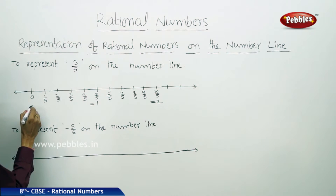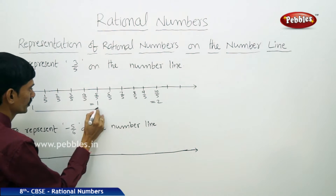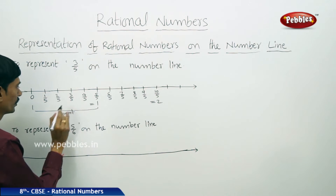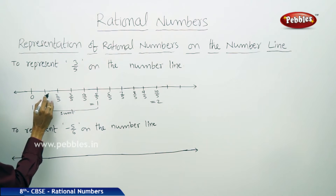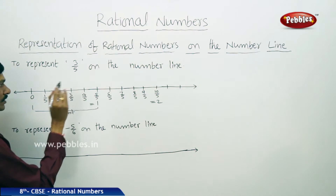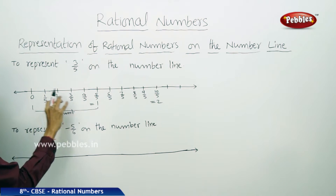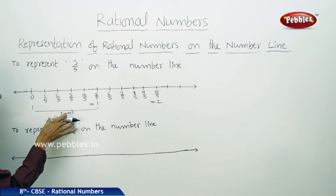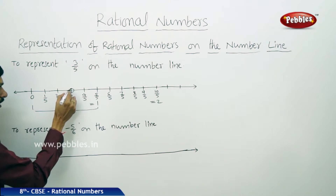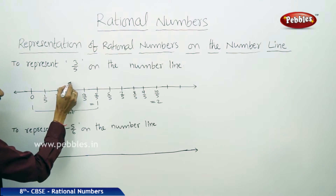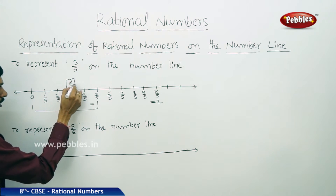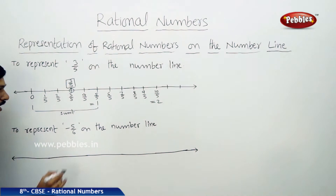From 0 to 1, this is 1 unit. In this 1 unit, there are 5 equal parts — 1, 2, 3, 4, 5. So 1 unit has been divided into 5 equal parts. The third part is 3 by 5, and this is our required rational number on the number line. From 1 to 2 is the second unit, also divided into 5 equal parts. So 7 by 5 can also be represented here.